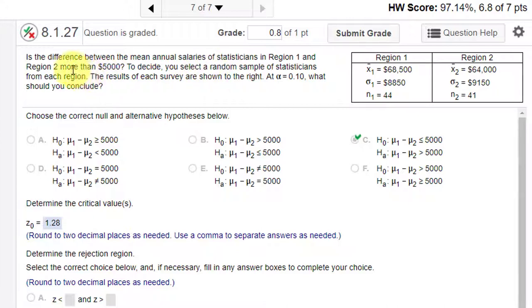The question is, is the difference between the salaries in region 1 and region 2 of statisticians more than $5,000? We're getting a random sample, and this is the summary data. Alpha equals 0.1.